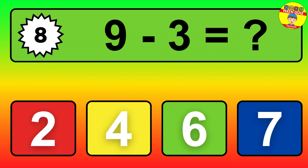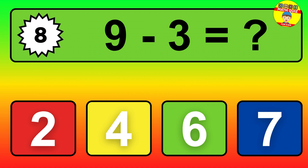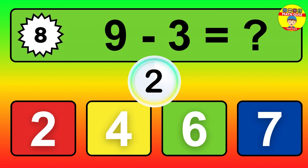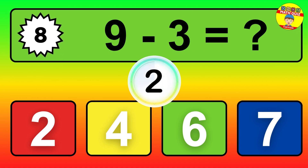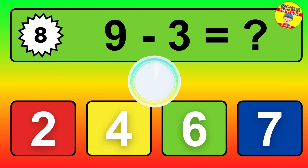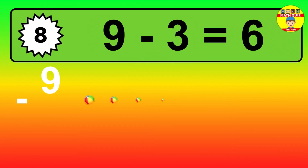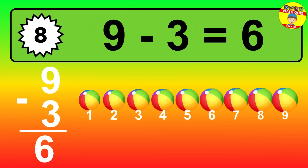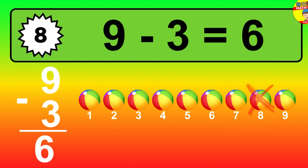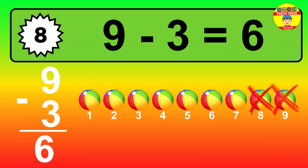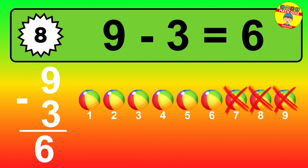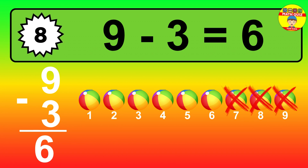Question 8. 9 minus 3 equals what? So the answer is 9 minus 3 is 6. Let's count it. 1, 2, 3, 4, 5, 6.